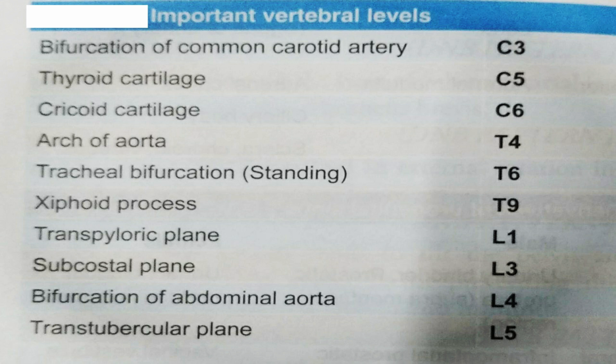Thyroid cartilage is at the level of C5, cervical vertebra number 5. Then cricoid cartilage is at cervical vertebra number 6, C6. Then the arch of aorta is at the level of T4.